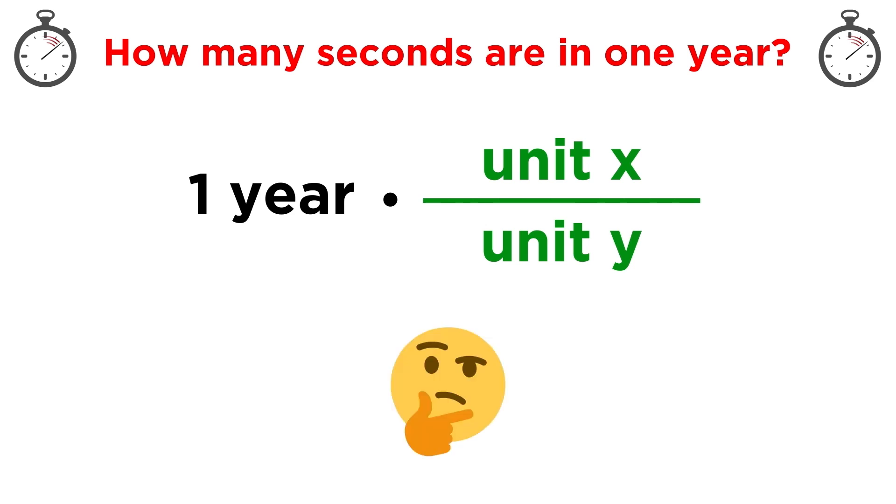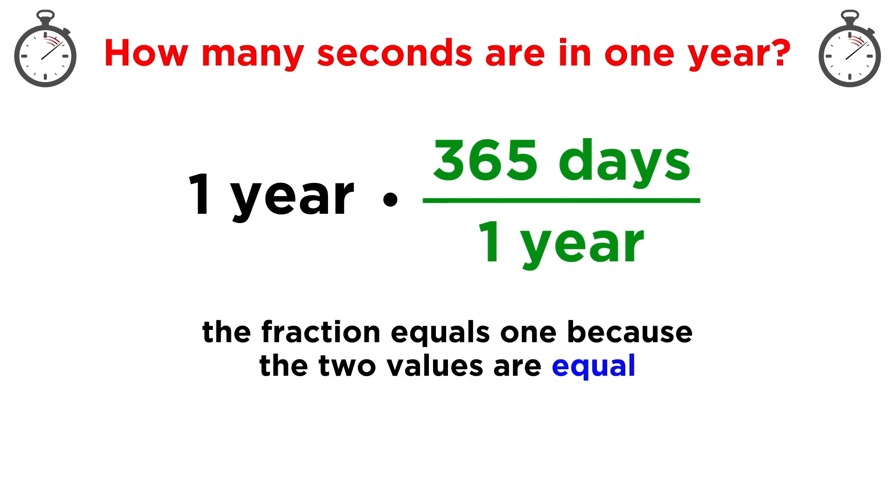So in the case of one year, let's think critically, what are some conversion factors we are aware of? Well everyone knows that there are 365 days in a year. In other words, 365 days equals one year. Those are the same length of time, so if we put 365 days up here and one year down there, this fraction does equal one.